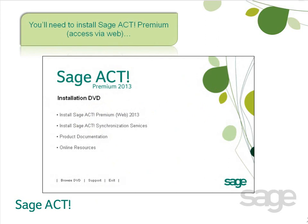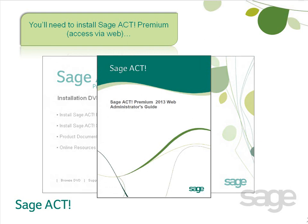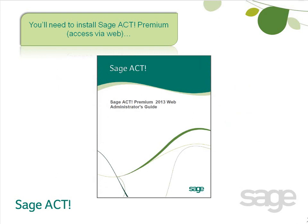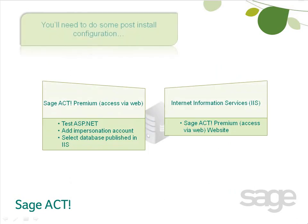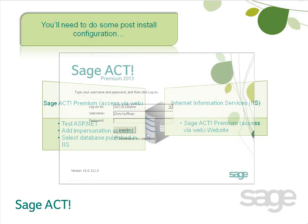A typical install is probably suitable for most situations. However, if you would like to read more about advanced configurations, please refer to the Sajak Premium Access via Web Administrator's Guide, available for download in the Sajak Knowledge Base. At this point, you have a web server and Sajak Premium Access via Web installed, but a database has not yet been published or made available to the web service.